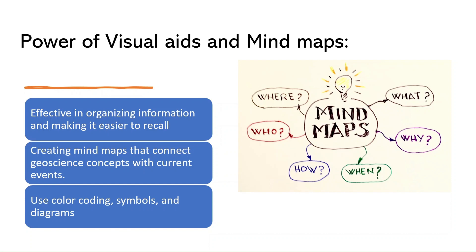You should start by creating mind maps that connect geoscience concepts with current events. For example, if you come across an article on climate change, create a mind map that links the causes, impacts, and potential solutions related to geosciences from the newspaper or online resources you are referring. While doing that, use color coding, symbols, and diagrams to make your mind maps visually appealing and memorable.